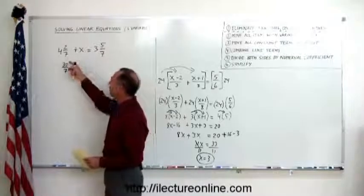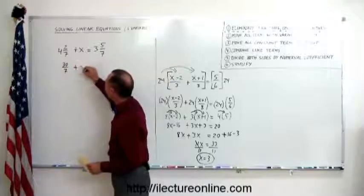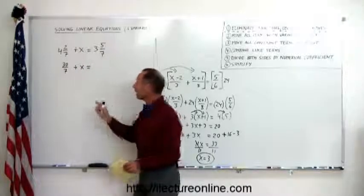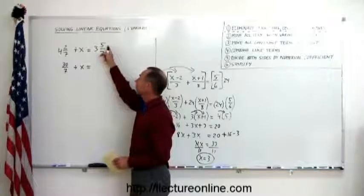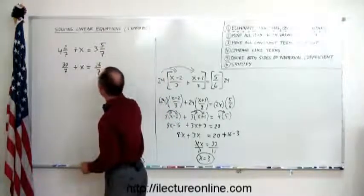We turn a mixed number into an improper fraction. So we have 30 over 7 plus x equals, and we do the same over here again. 3 times 7 is 21 plus 5 is 26, so this becomes 26 over 7.